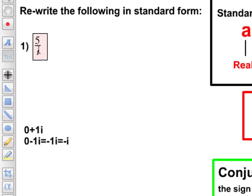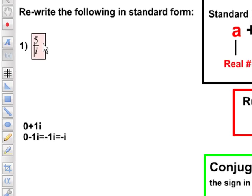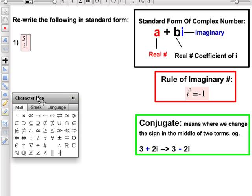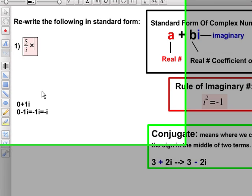So let's go back to our question, and we would like to multiply the numerator and the denominator by the conjugate of i, which we just found out was negative i.